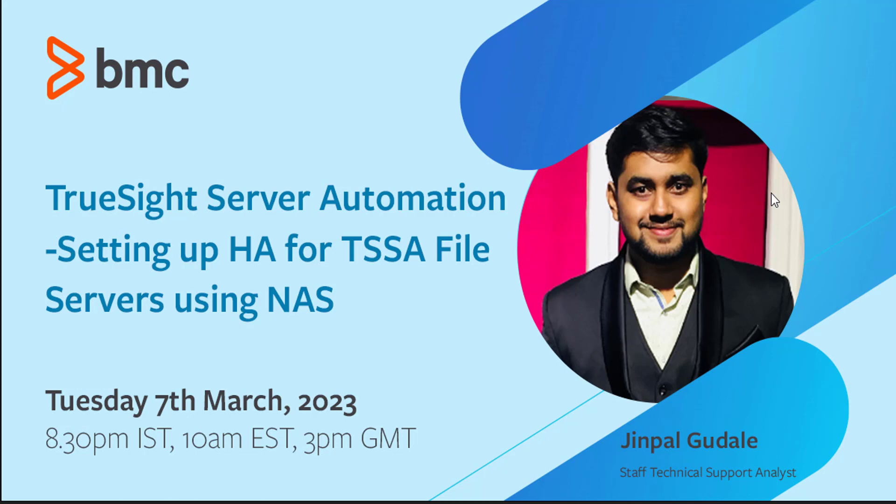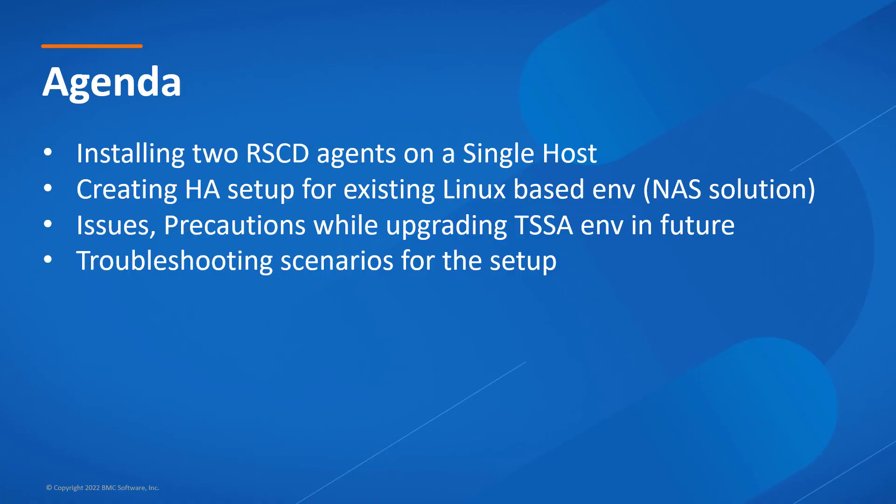In a multi-node application server environment with an existing highly available network attached storage already in place, the easier way to implement high availability on the file server is to add the file server to the NAS solution. The agenda for today's webinar: I will walk you through how to install two RACD agents on a single host, and setting up high availability for the existing Linux based environment using NAS solution, with a demo.